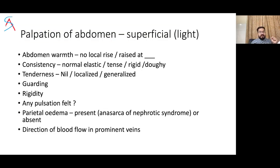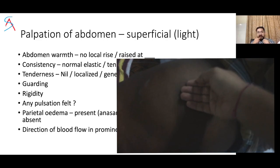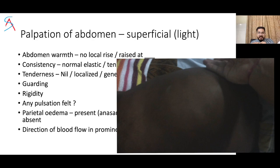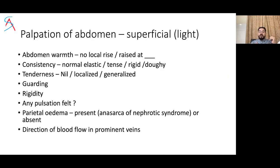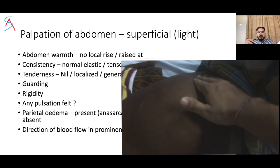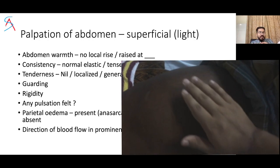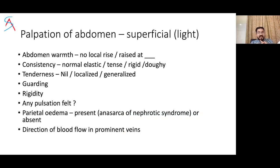In superficial light palpation, assess abdomen warmth using the back of the fingers in all quadrants, then compare with the chest or other body parts. Local rise of temperature at a particular site suggests localized etiology such as infection or inflammation. Comment about consistency — normally it is elastic; tense in ascites; rigid or doughy in TB peritonitis. Then assess tenderness in superficial examination.